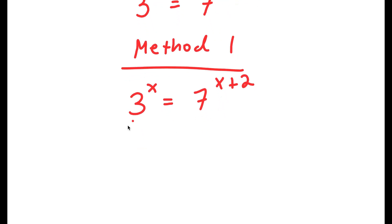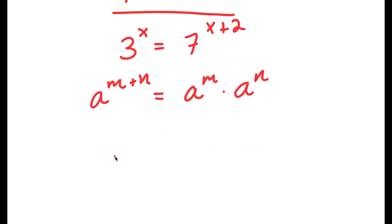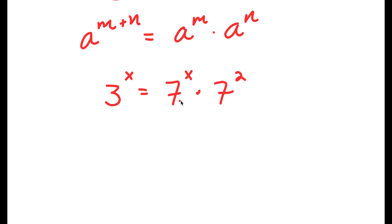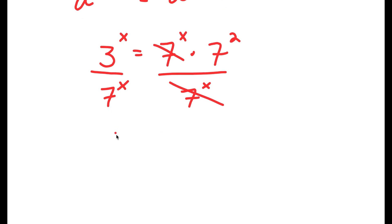If I have something in the form a to the power of m plus n, this is the same thing as a to the power of m times a to the power of n. So 7 to the power of x plus 2 is the same thing as 7 to the power of x times 7 to the power of 2. Now I'm going to divide both sides by 7 to the power of x. So I get 3 to the power of x over 7 to the power of x is equal to 7 to the power of 2.